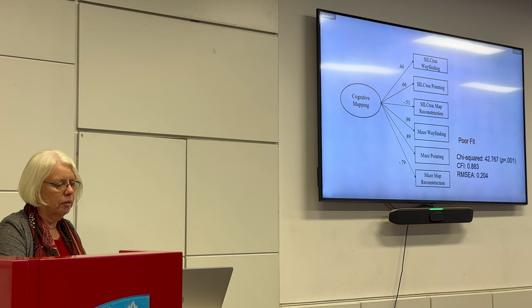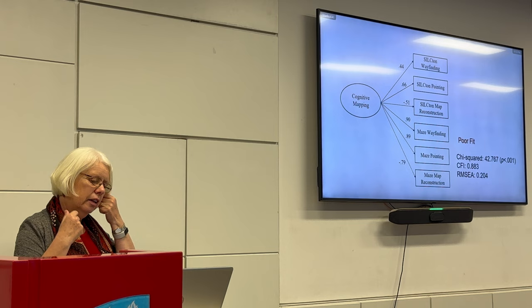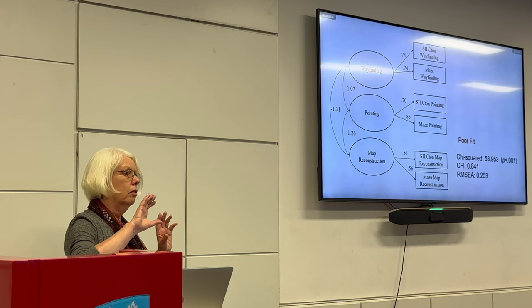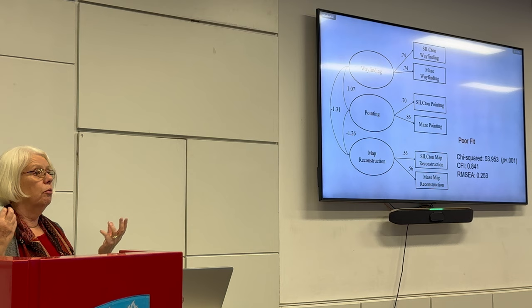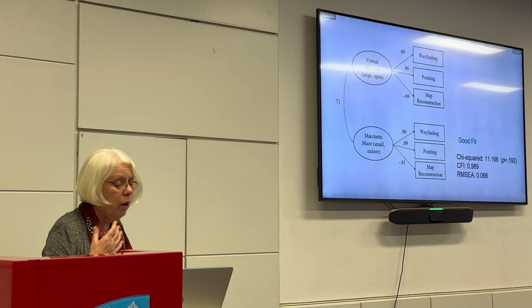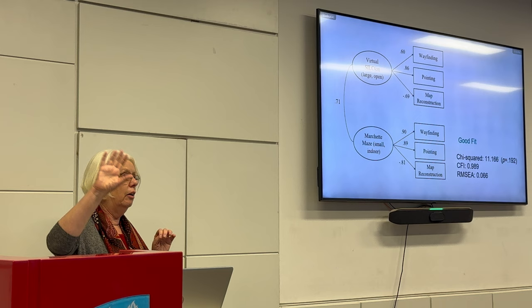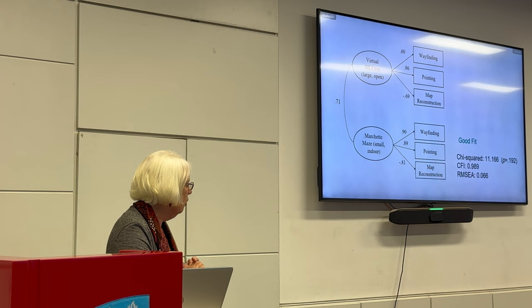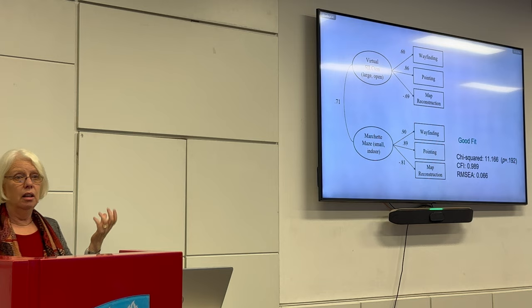The first model — a single ability relating all measures — was not a good fit to the data. The model saying that wayfinding, pointing, and map reconstruction all reflect different abilities was also not a good fit. The model that did fit well was the one saying there is some separability between the ability to learn the outdoor open environment and the indoor maze-type environment. However, those two factors were very highly correlated at 0.71, suggesting there is a lot of common variability being picked up across all of these measures.